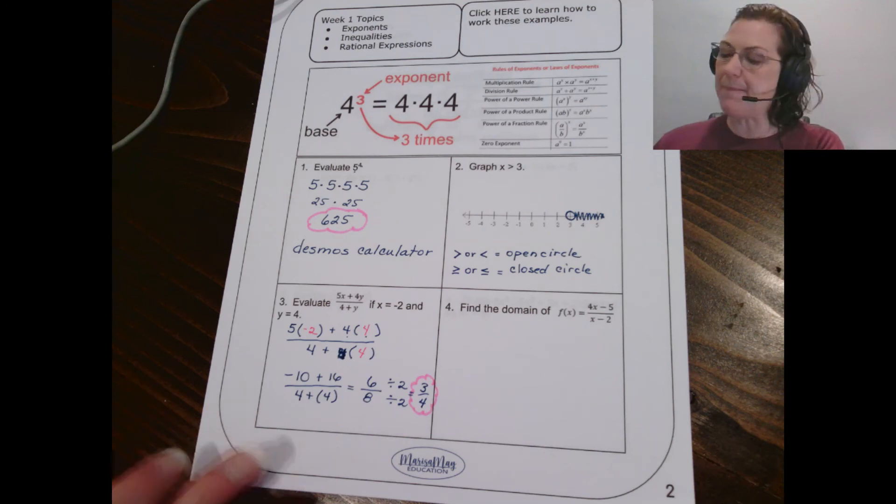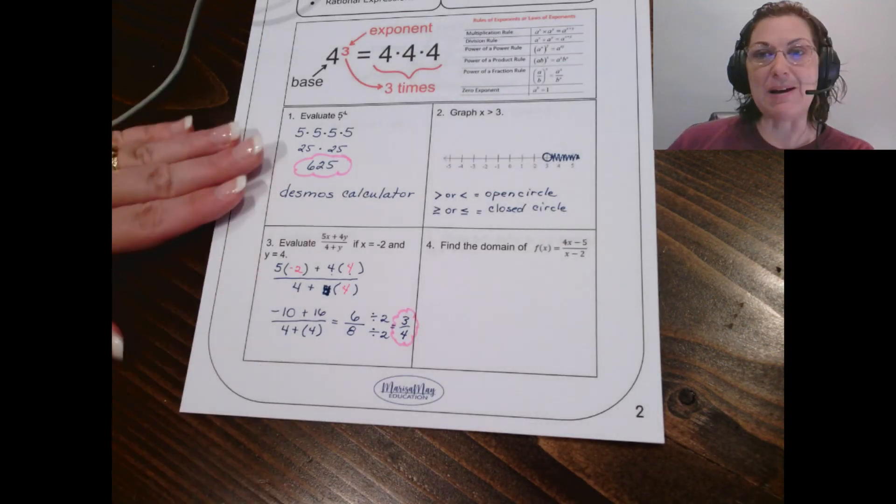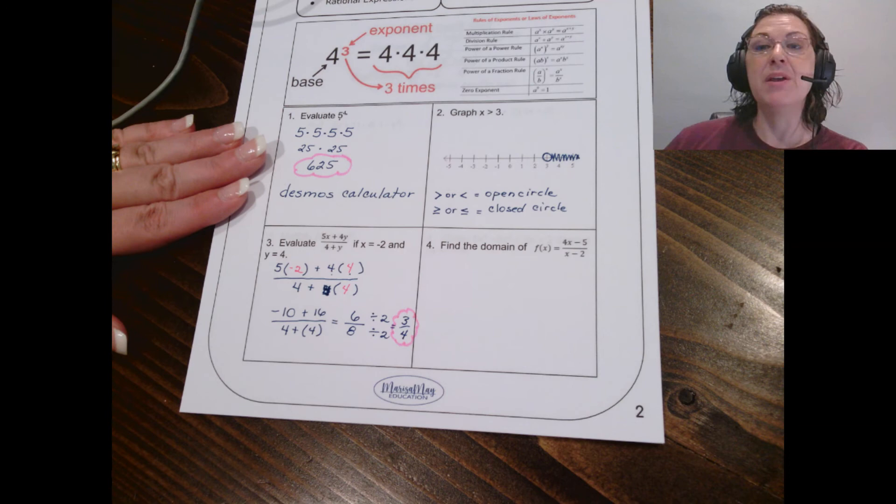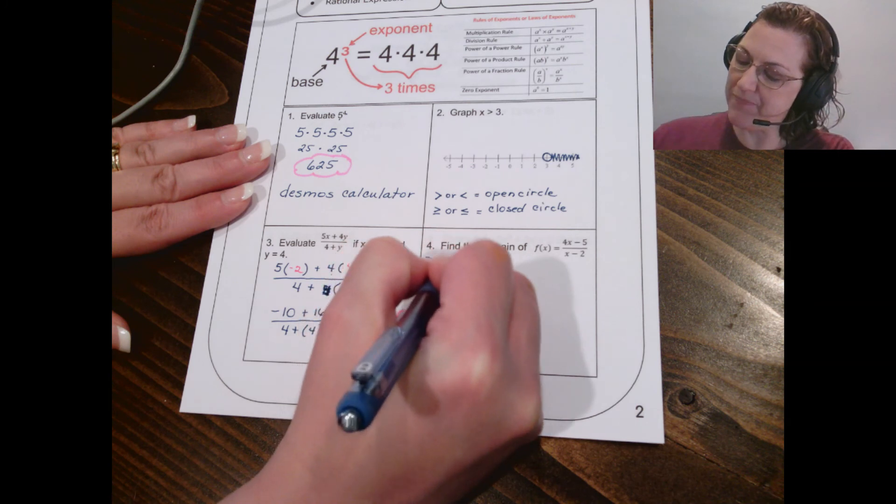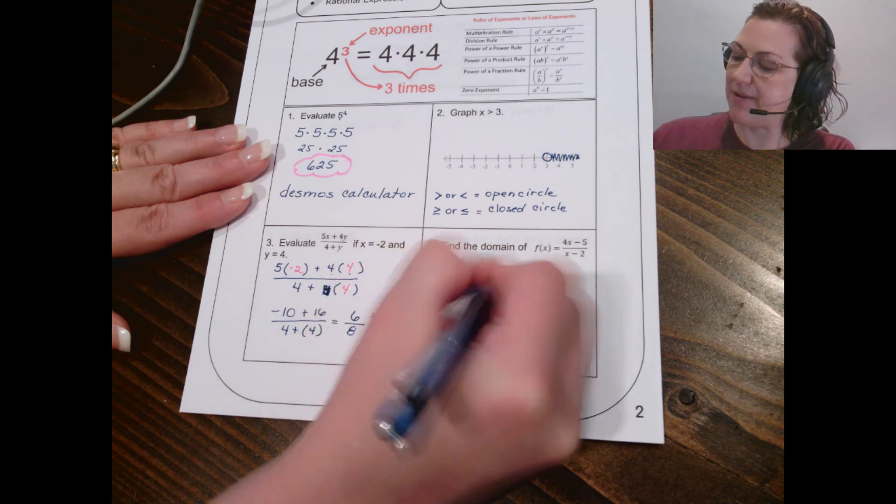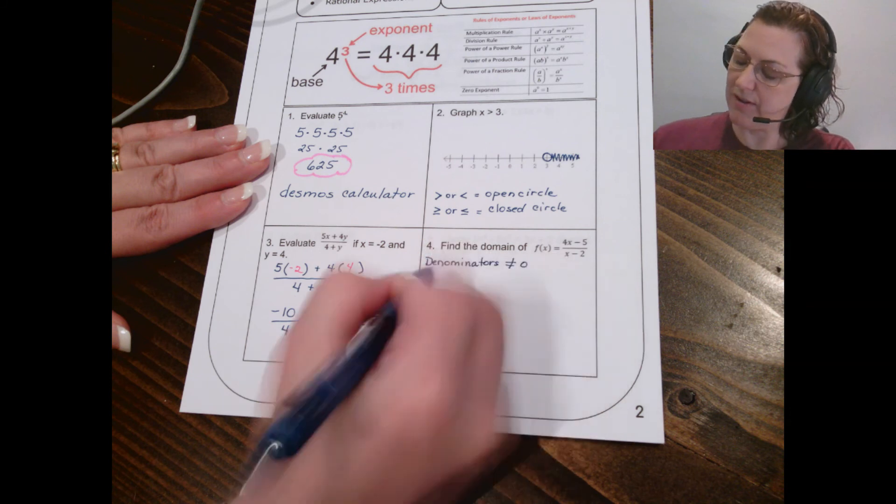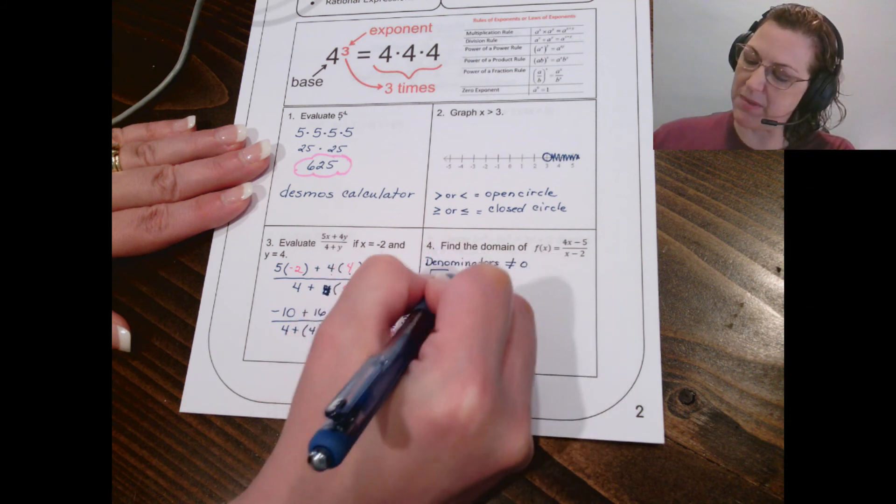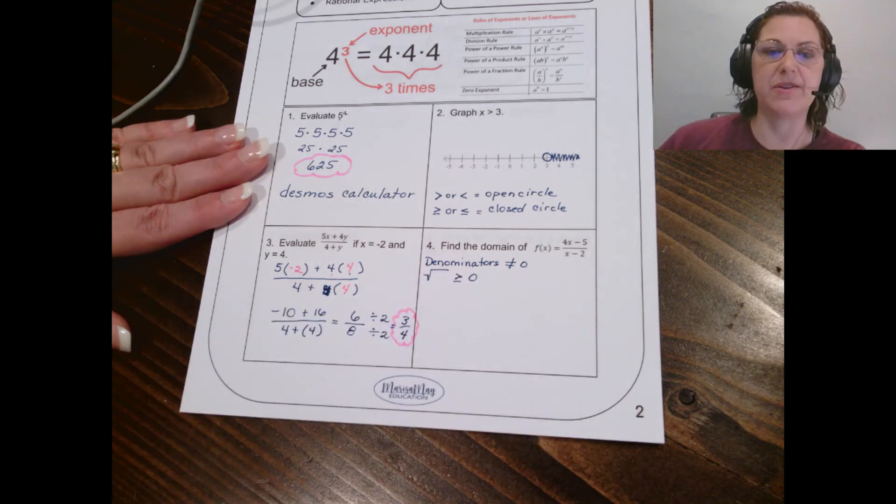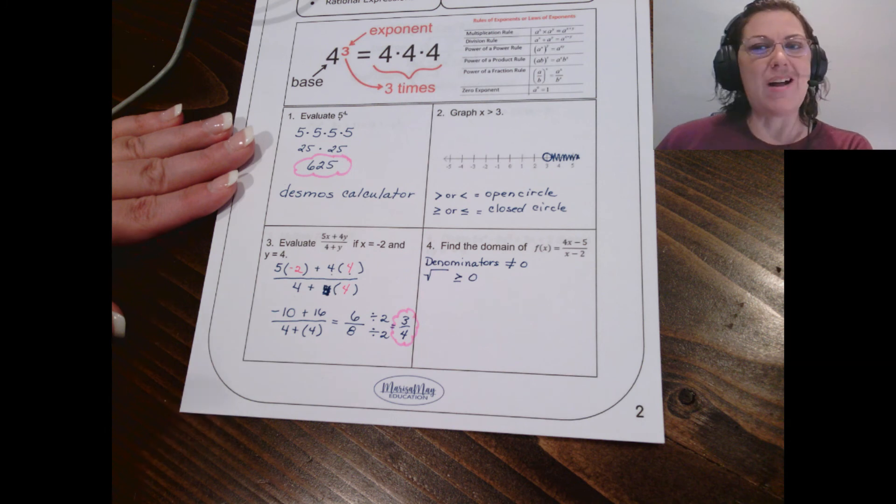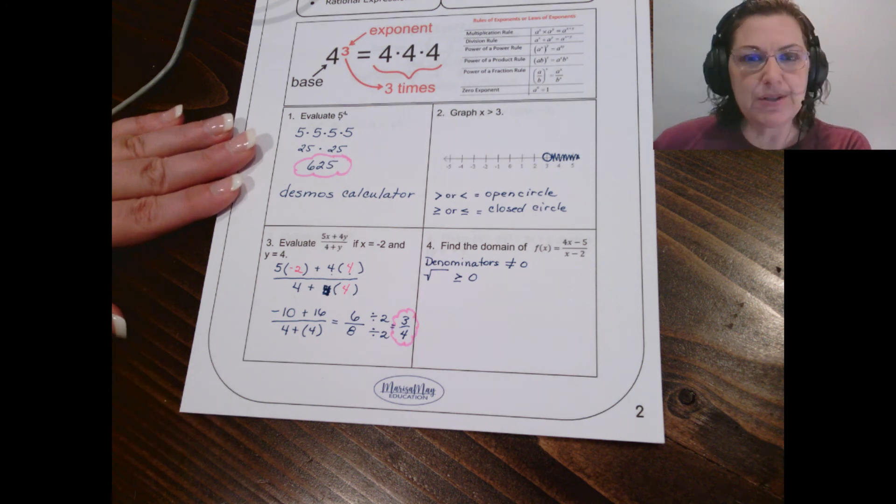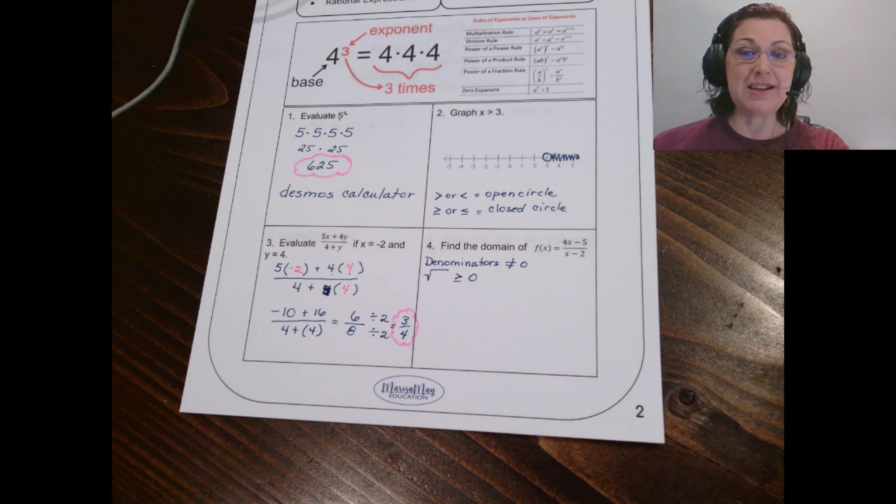Okay, number four then. Number four asks us about domain. Now we have two rules for domain, and that is that denominators cannot equal zero, and square roots must be positive, greater than or equal to zero. Those are the two rules. Which rule do we need here? Well, I don't see any square roots, so this must be the denominator rule.